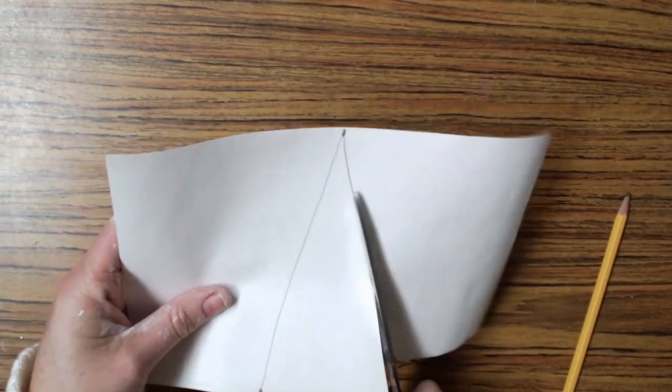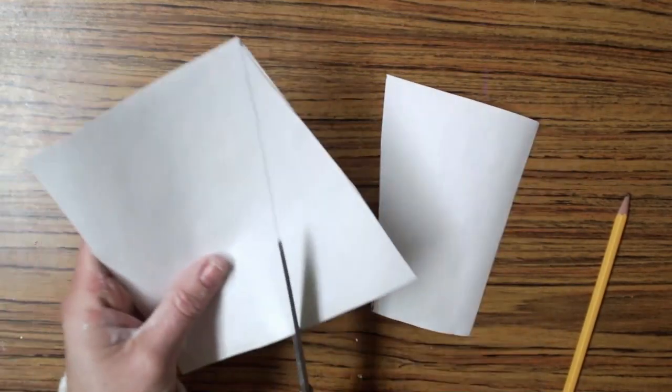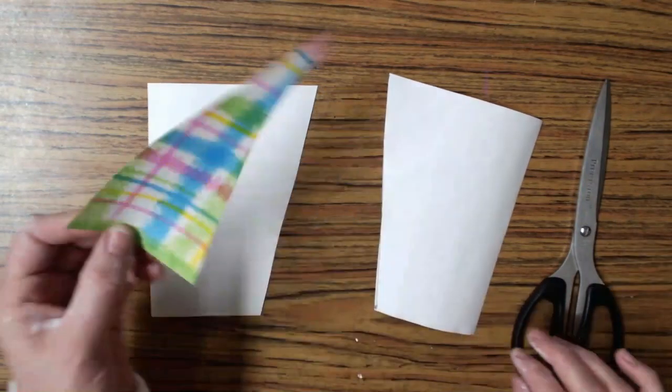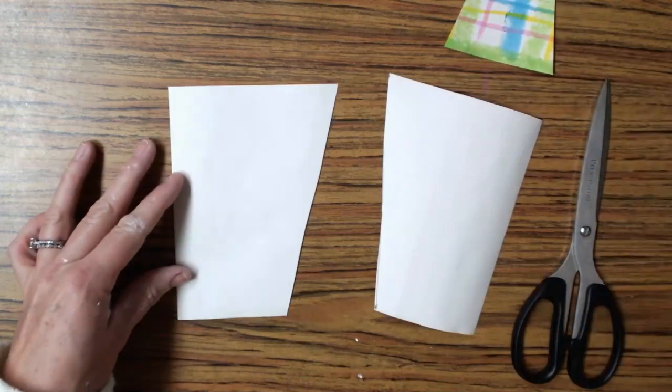Use your scissor to cut out that triangle. Look at how my point is all the way at the tippy top of the paper so I can get a nice big tree. Set that one aside.